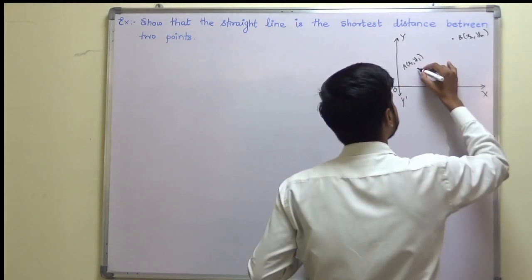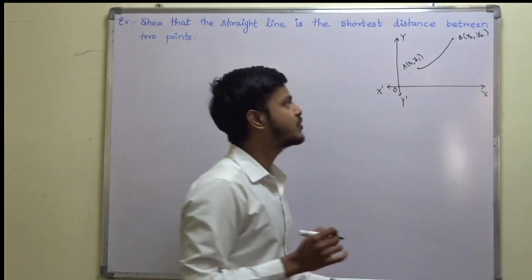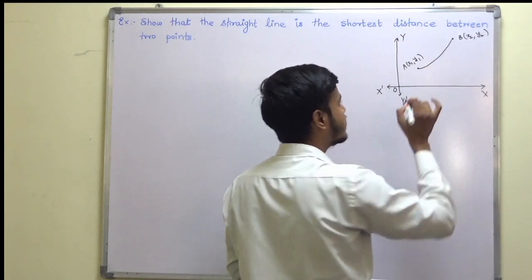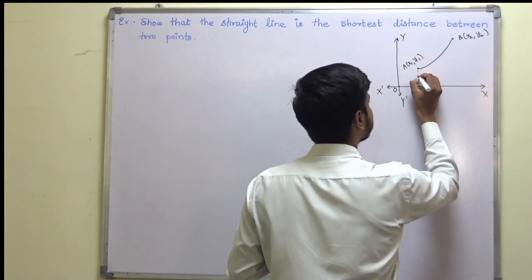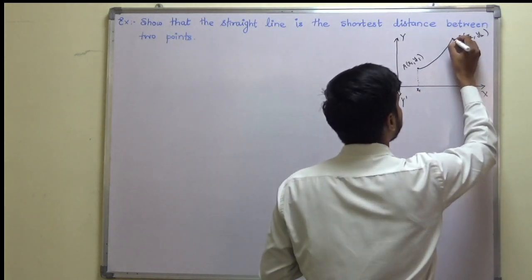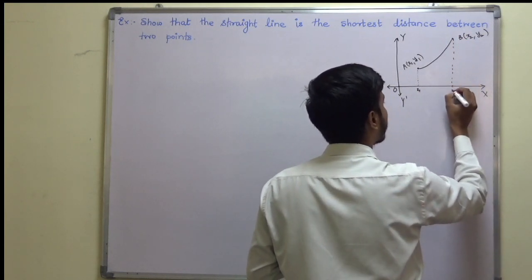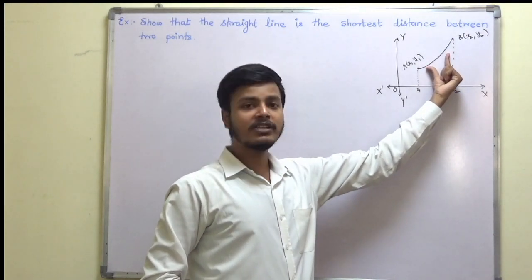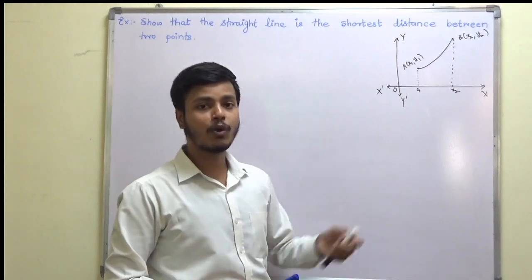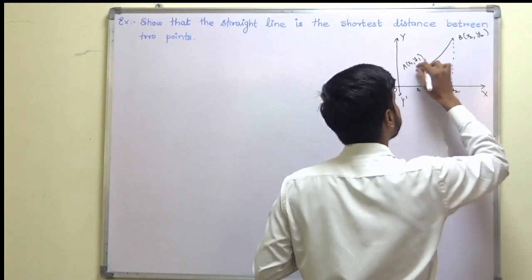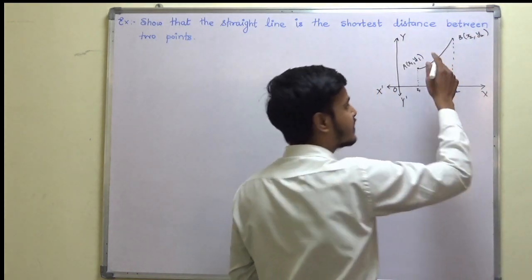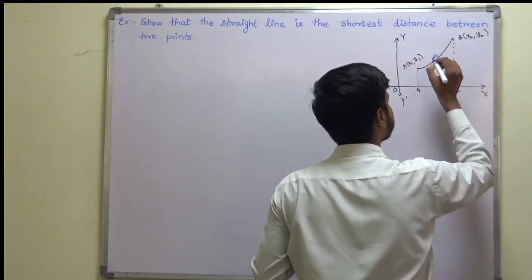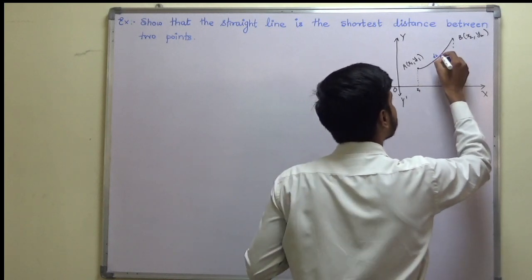Now this is the curve joining these two points. We have to show that the distance between these two points follows a curve. What we are going to do is take a small part of it. Say this small element goes from x1 to x2. We have to find out the length of this curve, so we take a small part of it. Suppose the length of this curve is S, and the small element is dS.